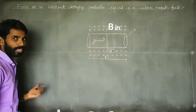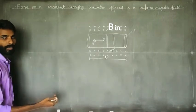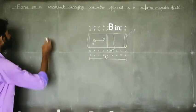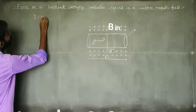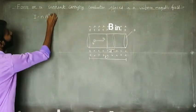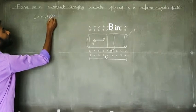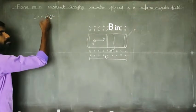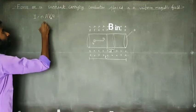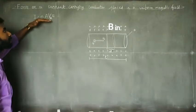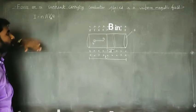We are going to learn the current and drift velocity relation. We will learn this from the current and electricity unit. The relation is: I is equal to nAVd_e. Are you ready?